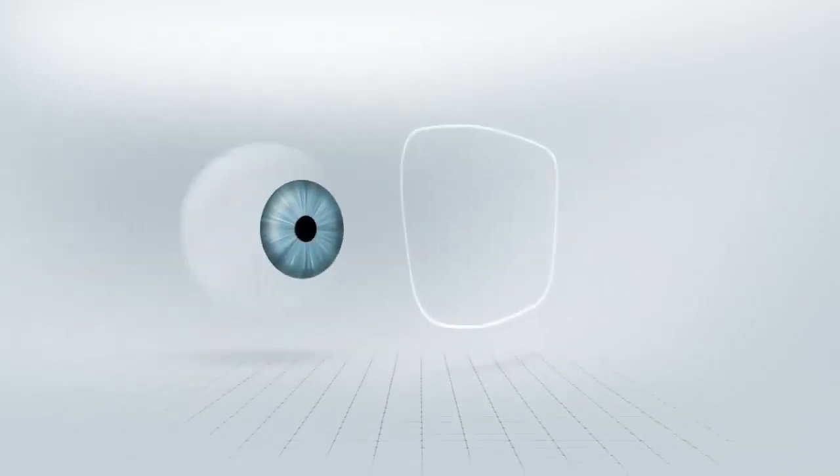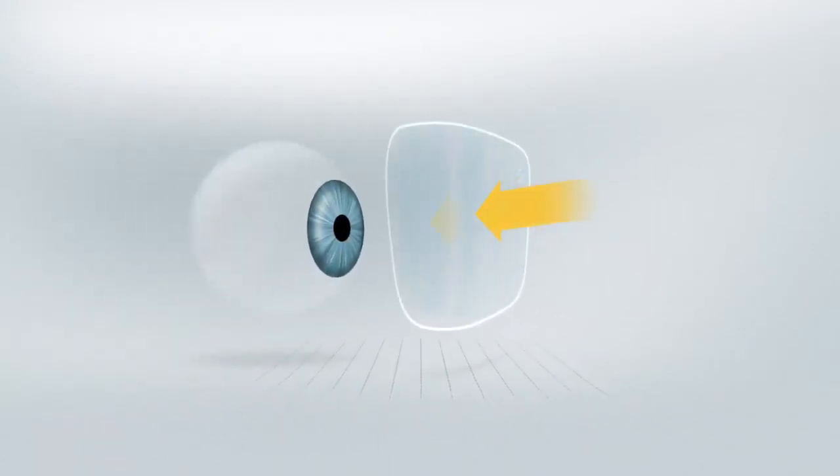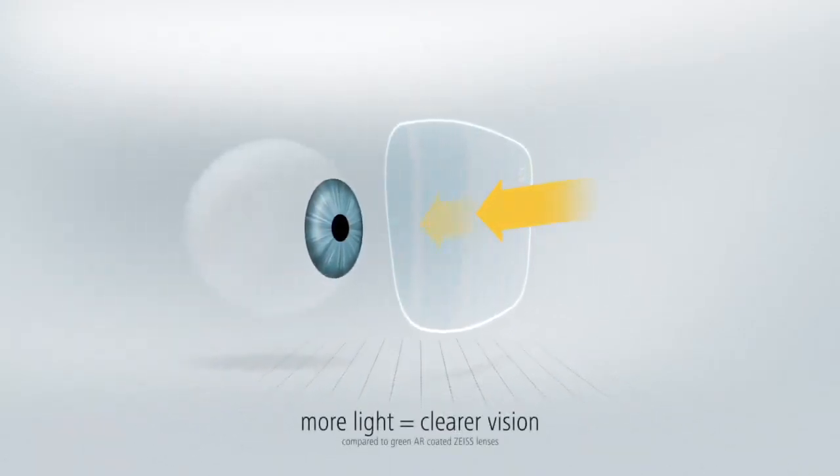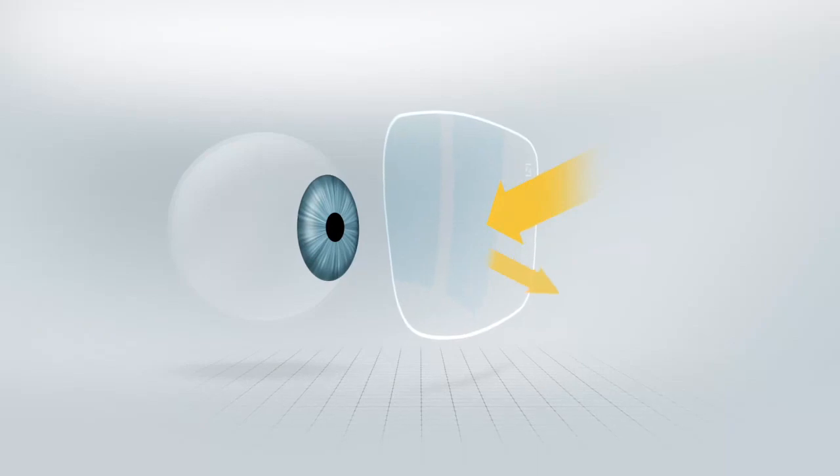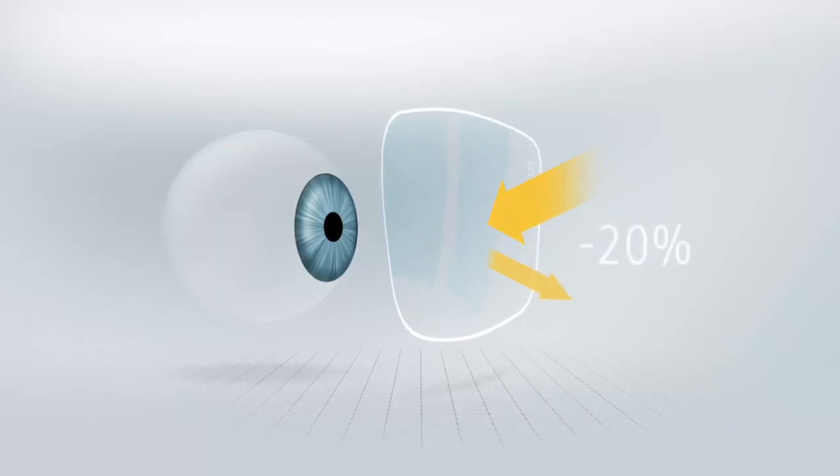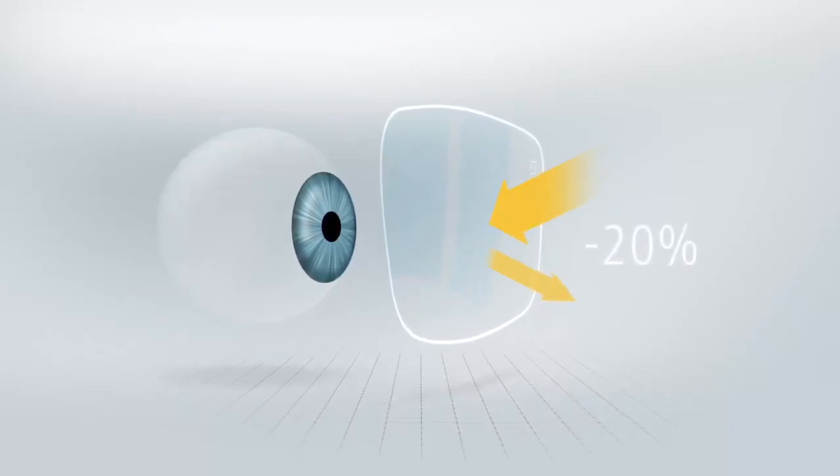Thanks to this bluish residual reflection, more light gets through the lens allowing clearer vision. Irritating light reflections are thus reduced by 20% in comparison to traditional anti-reflective coatings.